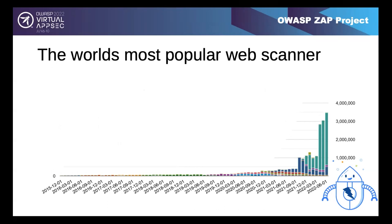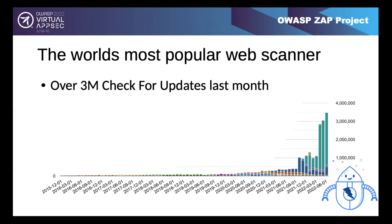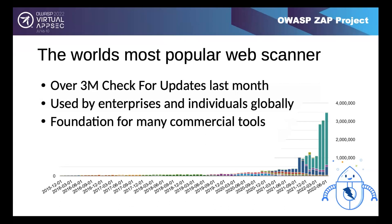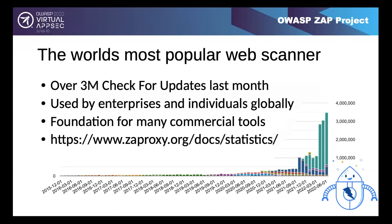ZAP is believed to be the world's most popular web scanner - a bold claim Simon has been making for years at security conferences with no disagreement. They had over three million check-for-updates calls last month. Since ZAP checks for updates on startup (unless turned off), actual usage is much higher. It's used by enterprises and individuals worldwide and is the foundation for many commercial tools. Statistics are available at zaproxy.org/doc/statistics.